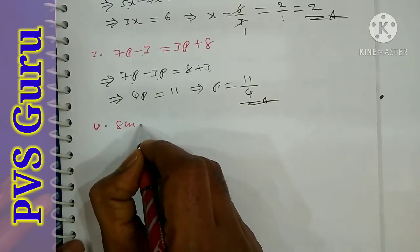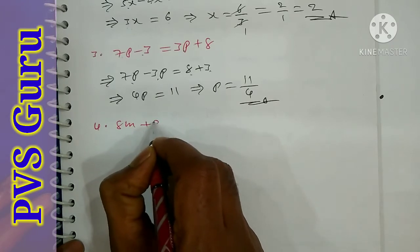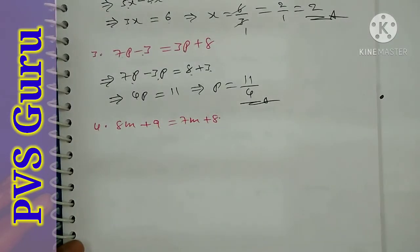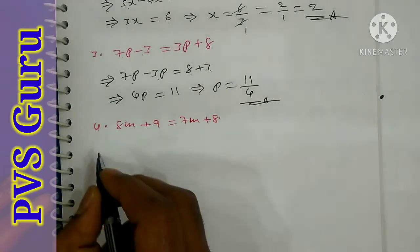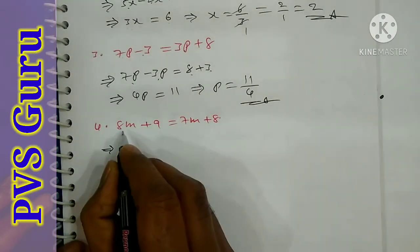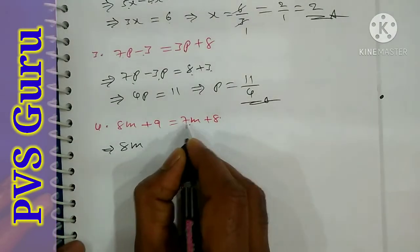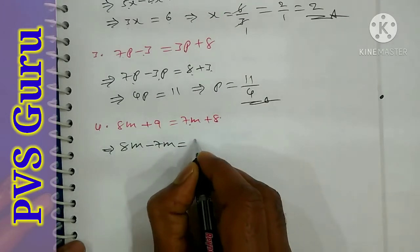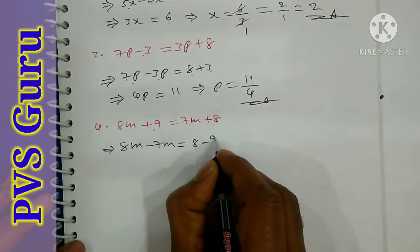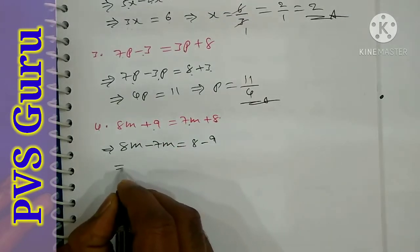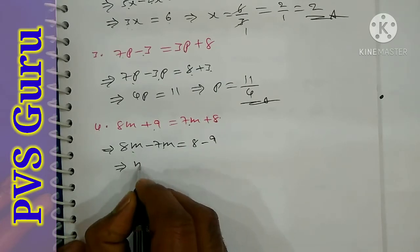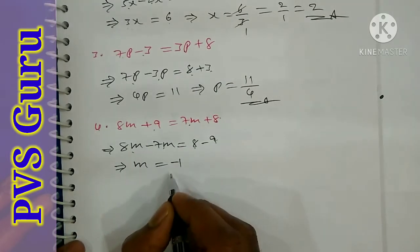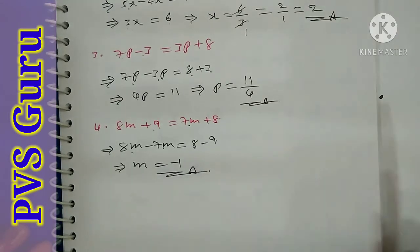Question number 4: 8m plus 9 is equal to 7m plus 8. Take 7m to the left side and 9 to the right side. 8m minus 7m is m. 8 minus 9 is minus 1. So m is equal to minus 1.